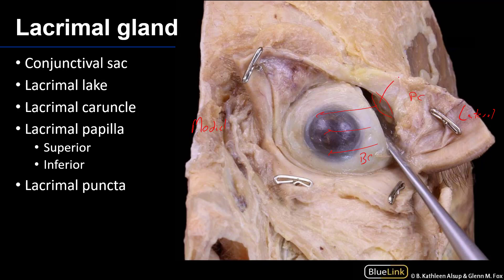We can see that the lacrimal gland sits in the superior lateral portion of the orbit. As tears are drawn medially across the eye, some are absorbed by the conjunctiva, some evaporate from the surface of the eye, but most accumulate in an area over the medial canthus — that accumulation of tears is known as the lacrimal lake.